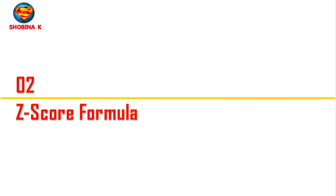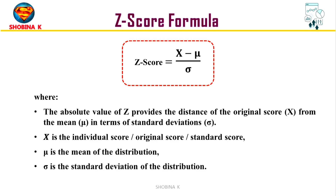Next, let's see the z-score formula. The z-score is calculated using this formula: x minus mu, divided by sigma. Where x represents the individual score or original score, mu is the mean of the distribution, and sigma is the standard deviation of the distribution. The absolute value of z provides the distance of the original score x from the mean mu in terms of standard deviations sigma.